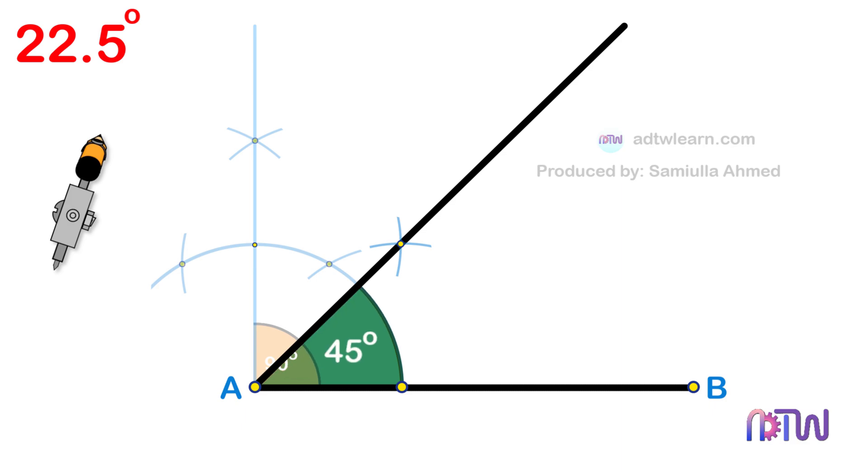To get a 22.5 degree angle, we need to divide this 45 degrees in half. To do so, divide this angle in half.